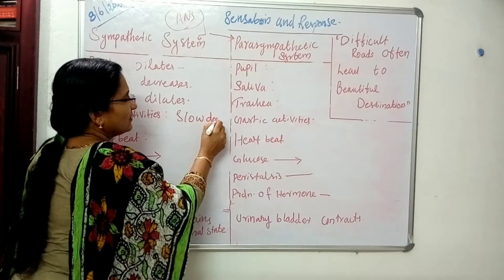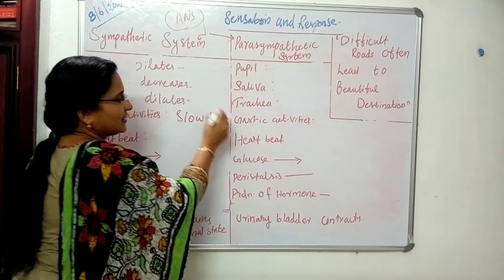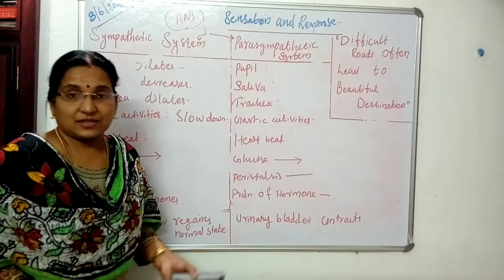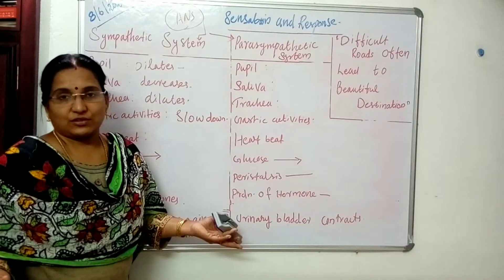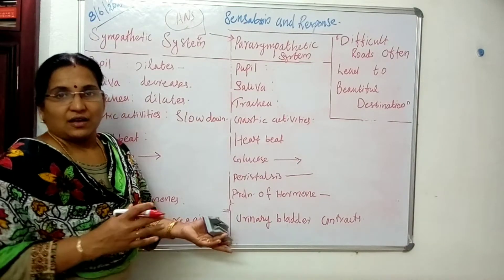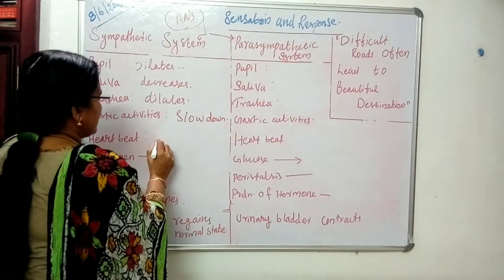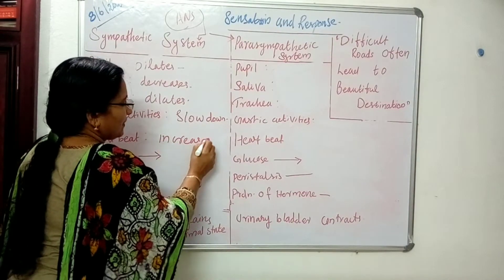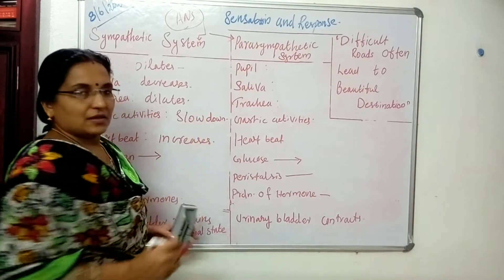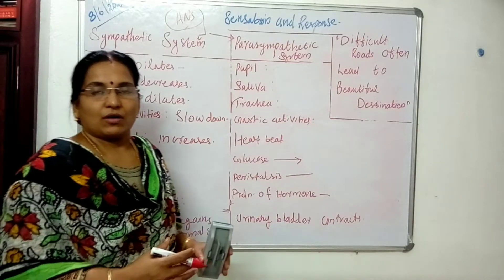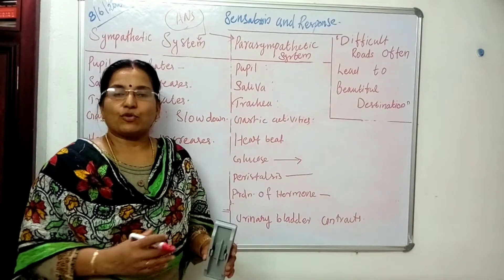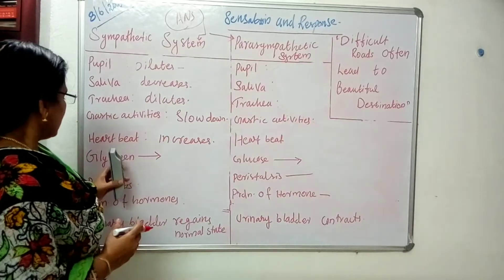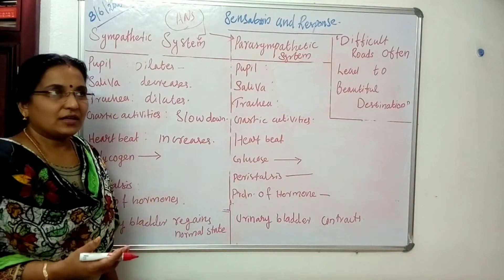Gastric activities slow down — that is why we don't feel any hunger when we are too anxious. Then the heartbeat increases, and more blood flows towards the muscles.